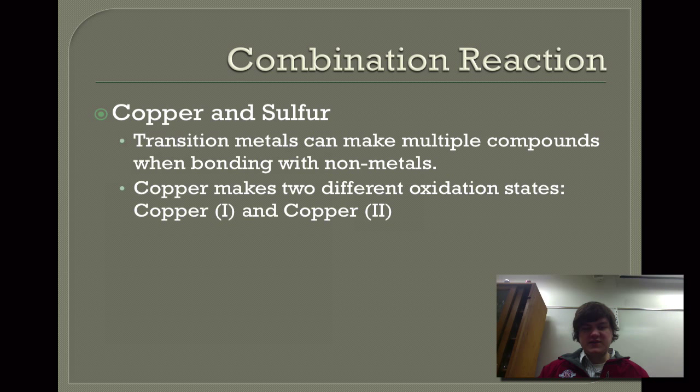For copper I, it combines two copper atoms with one atom of sulfur to form Cu2S. The copper in this case has a one positive charge. The sulfur forms a sulfide ion and has a two negative charge, so it takes two copper atoms to offset that.